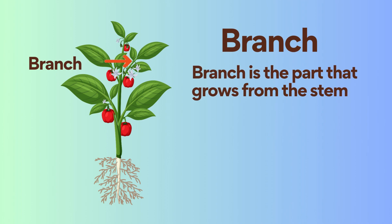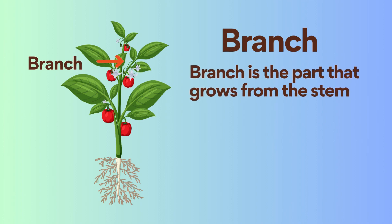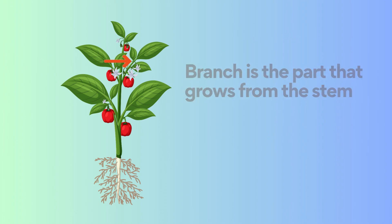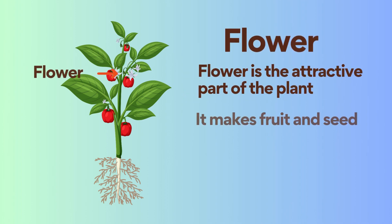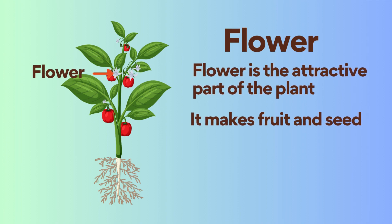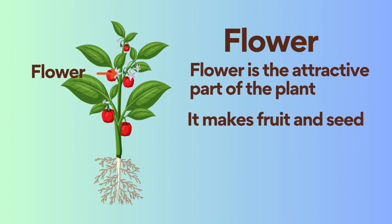Branch is the part that grows from the stem. Flower is the attractive part of the plant, and it makes fruit and seed.